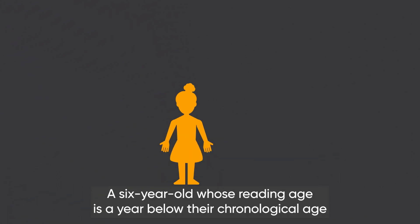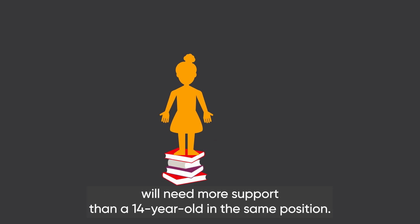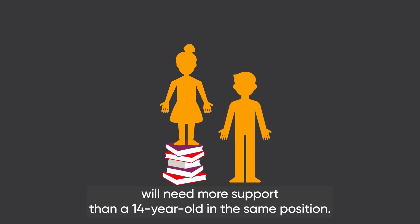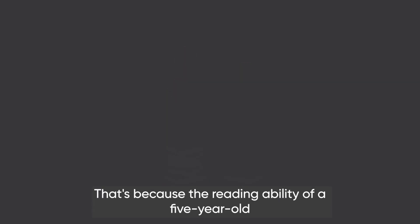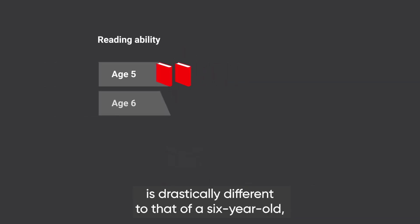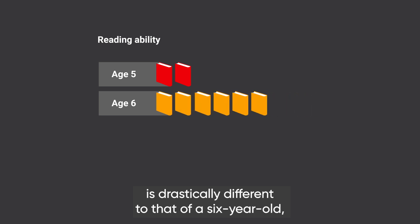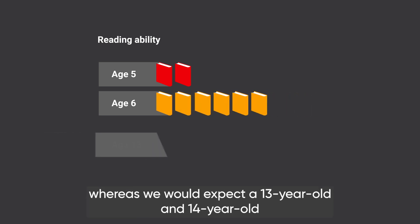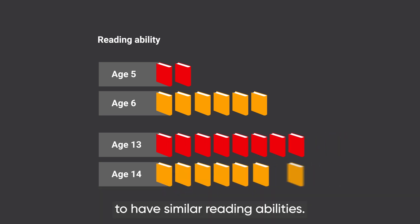A 6 year old whose reading age is a year below their chronological age will need more support than a 14 year old in the same position. That's because the reading ability of a 5 year old is drastically different to that of a 6 year old, whereas we would expect a 13 year old and 14 year old to have similar reading abilities.